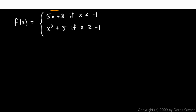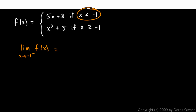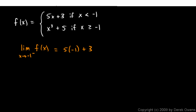This is a cubic curve, and that's continuous. The question is, at x = -1, where the definition changes, do these two curves meet up? Let's think about the limits from the left and from the right. The limit as x approaches -1 from the left uses the expression 5x + 3, so we compute 5 times -1 plus 3, which is -2.